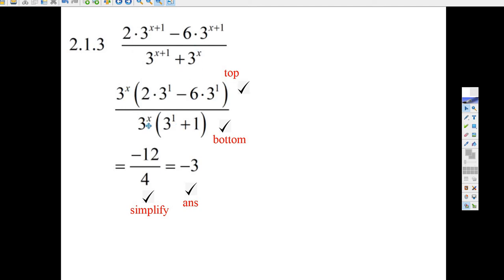Well, there you go. 3 to the x is cancel. And this is just a number. It's 6 minus 18, which is minus 12. And minus 12 divided by 4 equals your answer of negative 3. And there you go.